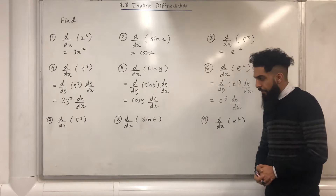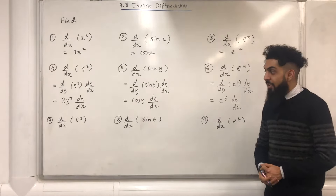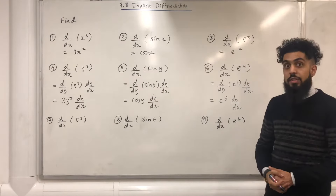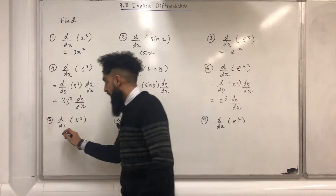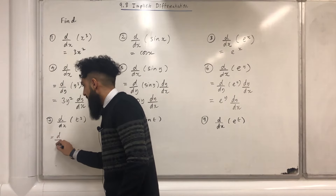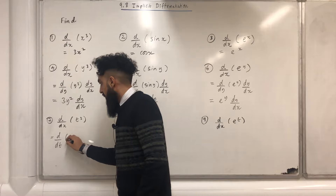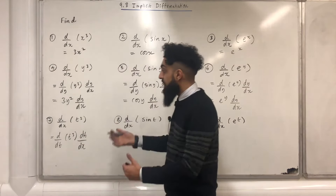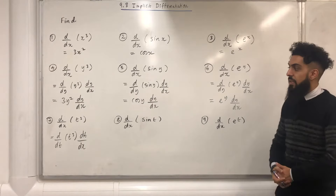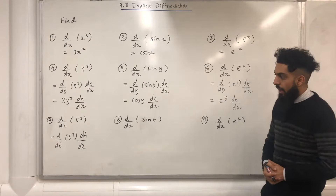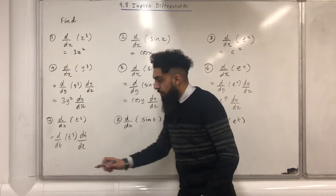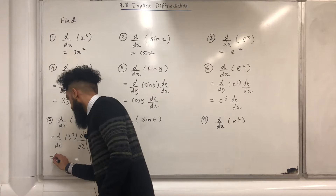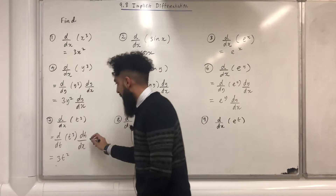Question number seven: differentiate t cubed with respect to x. Again, I can use the chain rule and write d over dt of t cubed, multiplied by dt over dx. You can see that dt is cancelling to give me d over dx of t cubed. Differentiating t cubed with respect to t gives 3t squared, and then dt over dx.